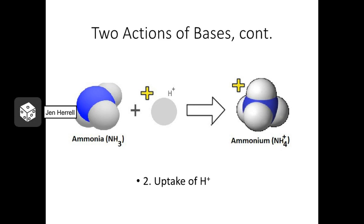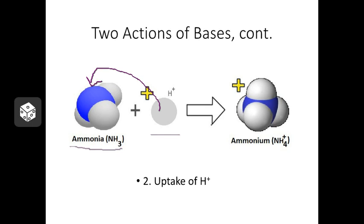Another action bases can take is directly taking up hydrogen ions — directly accepting protons. For example, NH3, ammonia: it interacts with hydrogen in the solution. If you mix ammonia with an acid, it will take the hydrogen and stick it onto itself to form ammonium, NH4+, which has a positive charge. Because it added that hydrogen to itself, that hydrogen is no longer floating around in solution acting like an acid. So this chemical is acting as a base by removing protons from the solution.